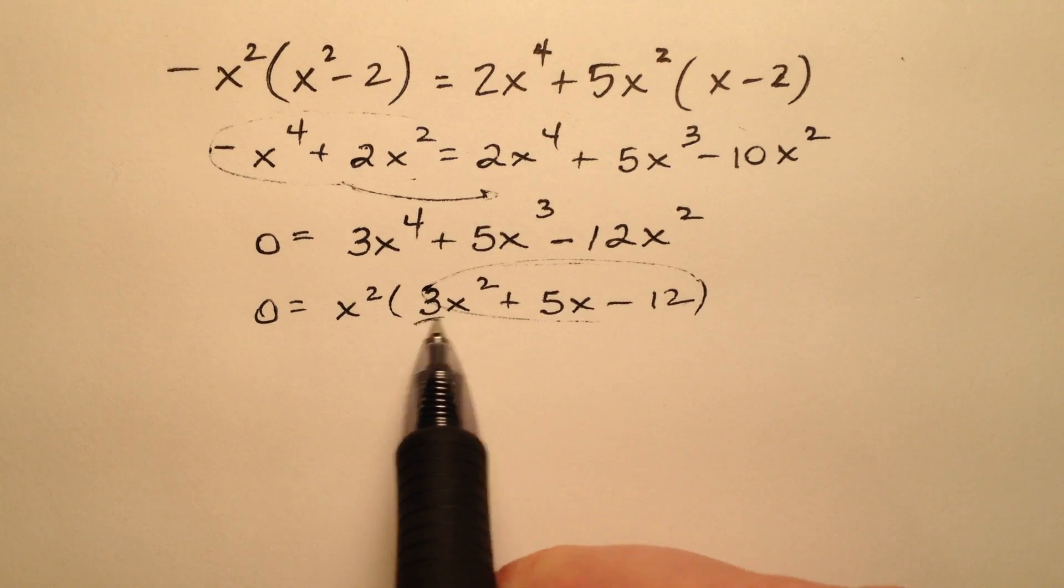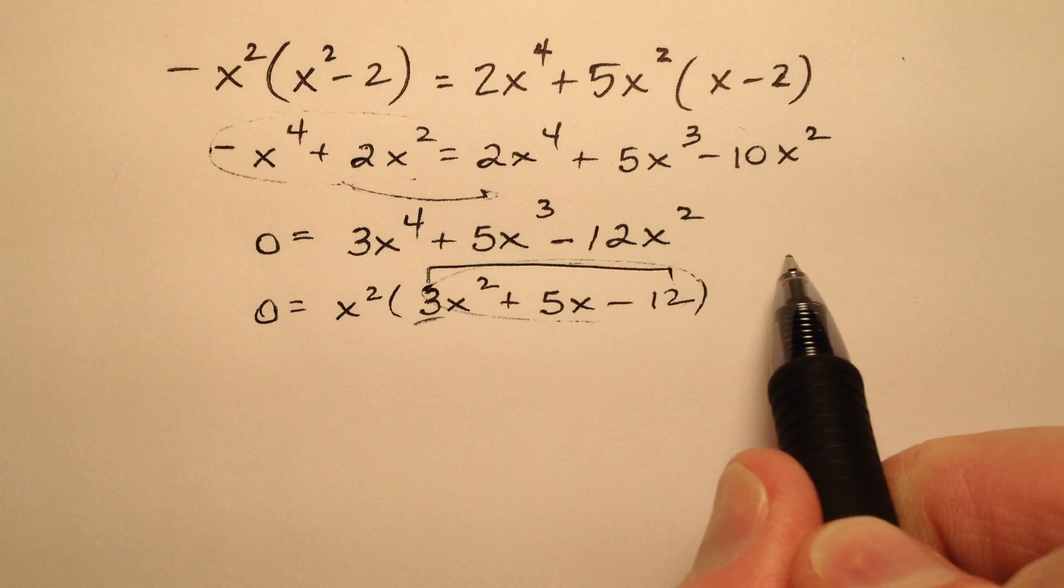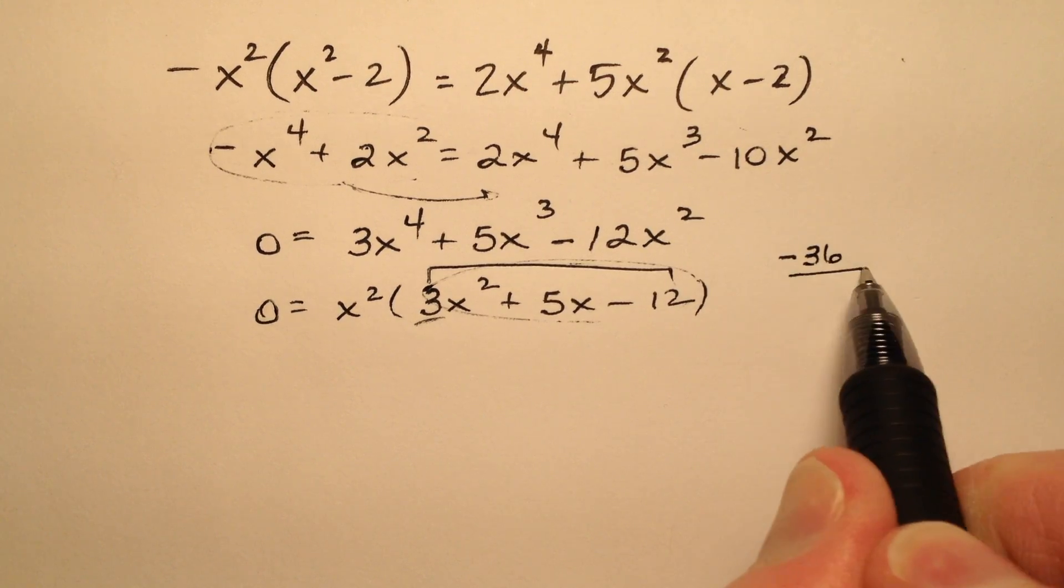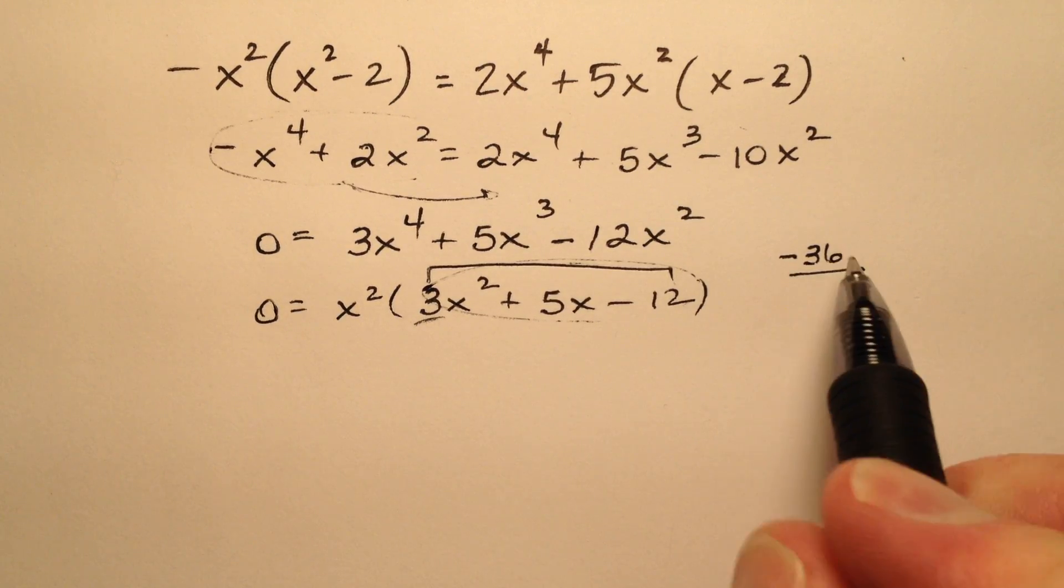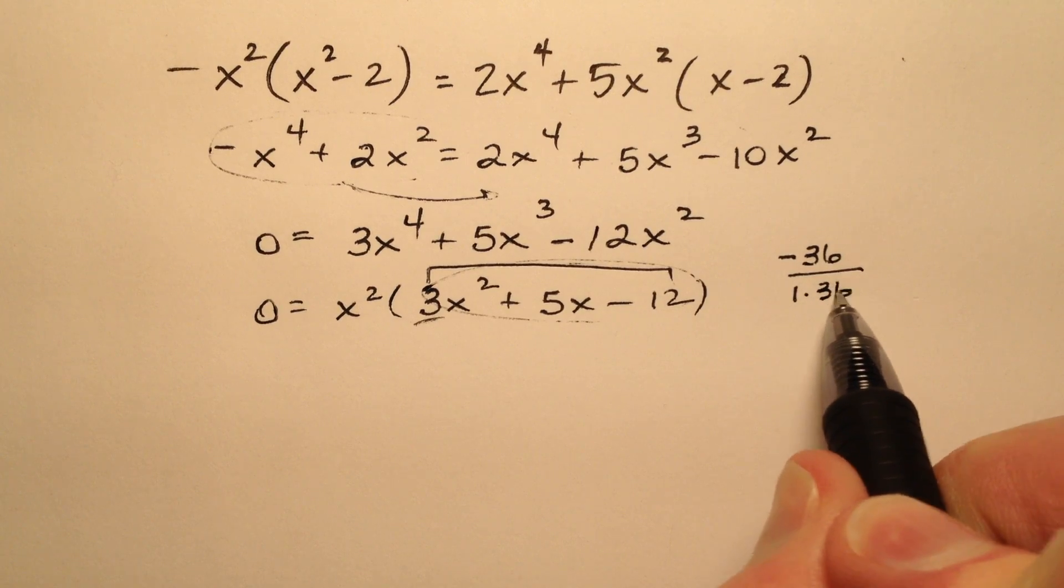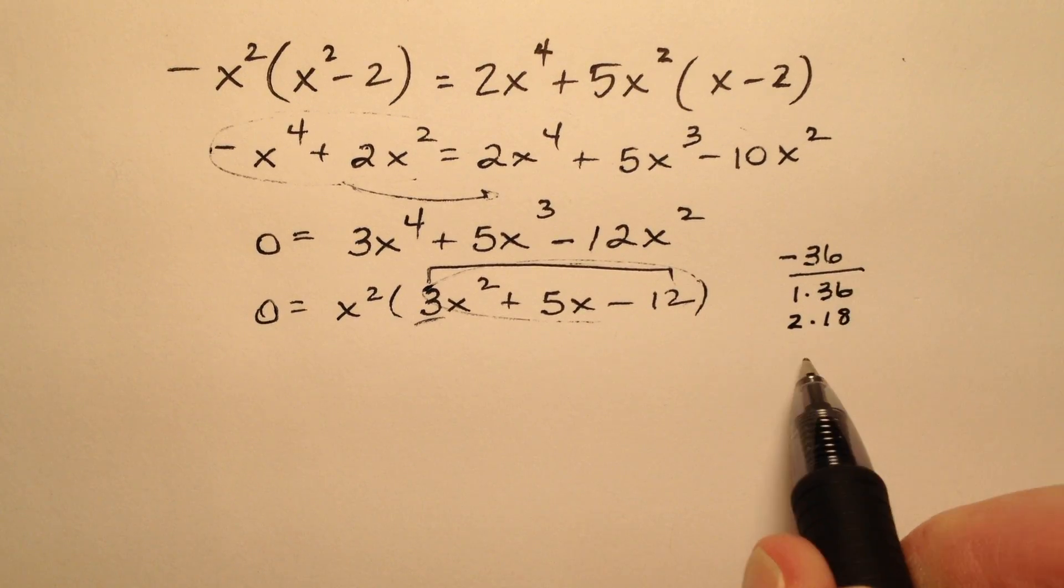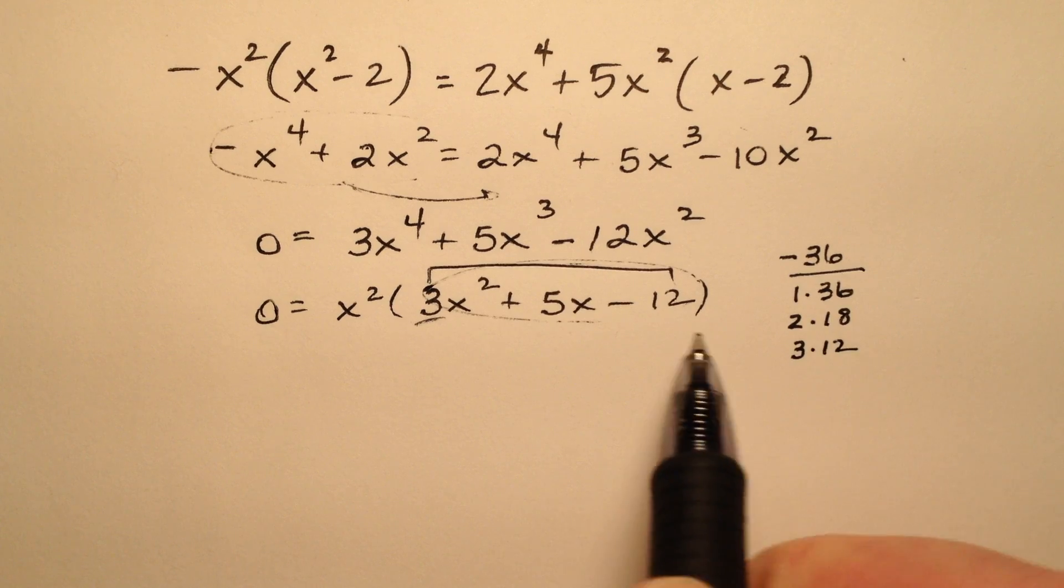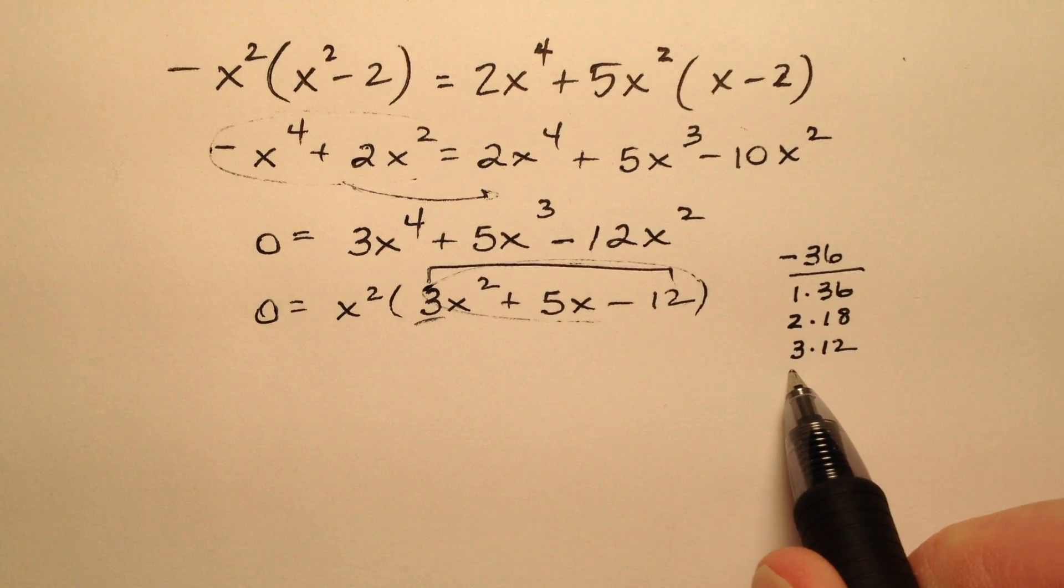My leading coefficient is not 1, so I'm going to go ahead and do the AC method, where 3 times negative 12 is negative 36. So let's look for factors of negative 36 that will add up to positive 5.